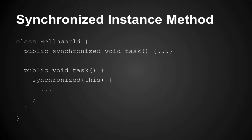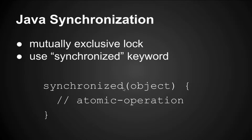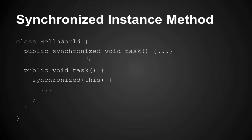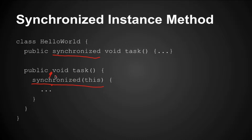In Java, besides synchronizing on an object directly, you can also add the synchronized keyword to a method. If you add it to a regular instance method, it is the same as synchronizing on 'this' — the current object instance. So these two forms are equivalent.